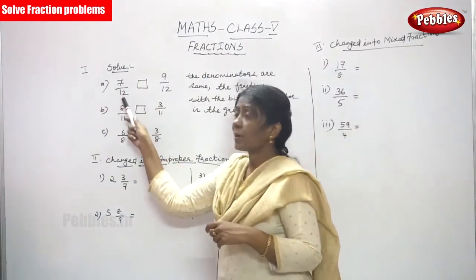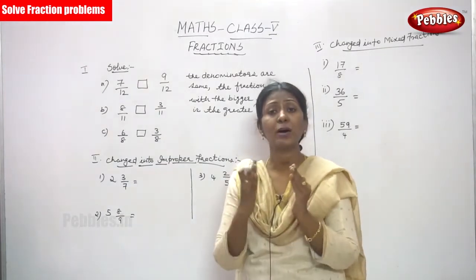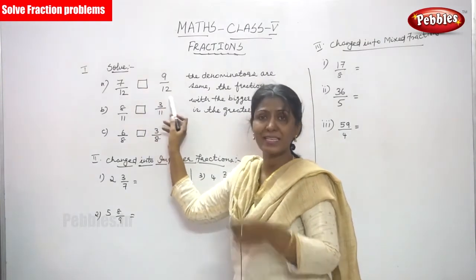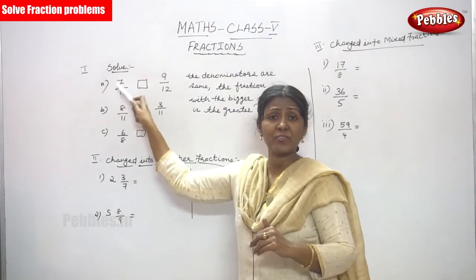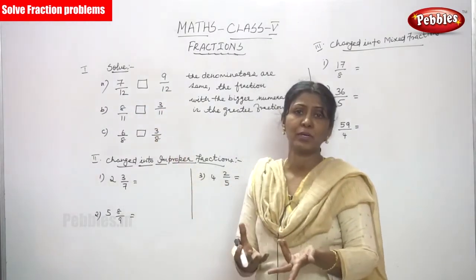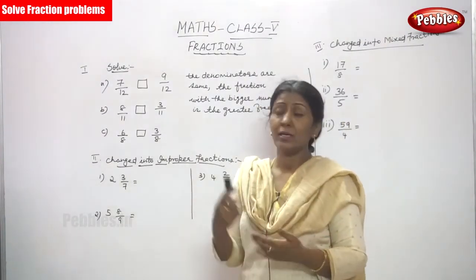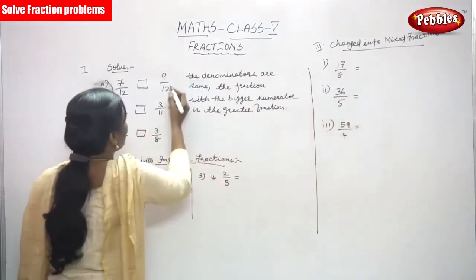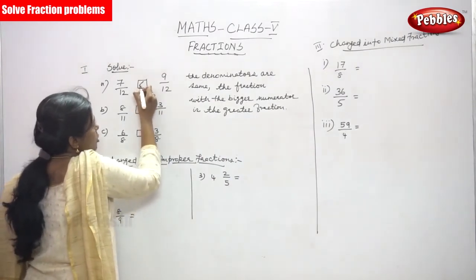I will repeat once again. 7 by 12 is one fraction and 9 by 12 is another fraction. You have to find out which is the greater fraction. If you have the same denominator, you have to locate only the numerator which is greater. In both fractions, the denominators are the same, so you have to verify only the numerator. The first fraction's numerator is 7, the second fraction's numerator is 9. The fraction with the bigger numerator — 9 — gives us 9 by 12 as the greater fraction. So 7 by 12 is less than 9 by 12.